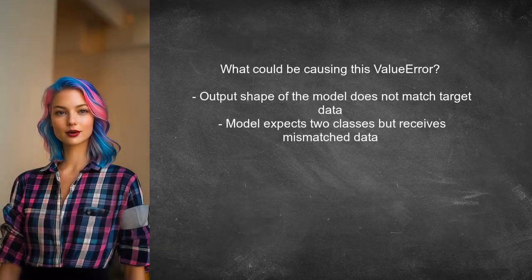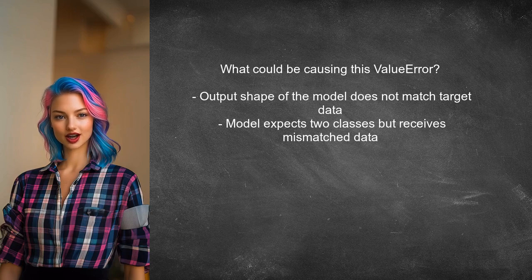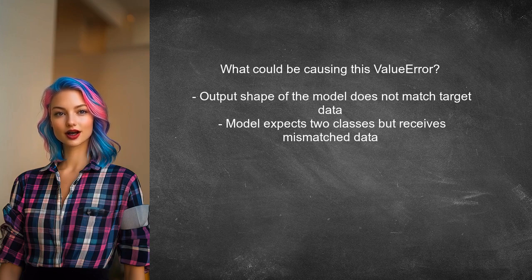So, what could be causing this value error? This error typically arises when the output shape of your model does not match the shape of your target data. In this case, it seems like the model is expecting two classes, but it's receiving data that doesn't match that expectation.